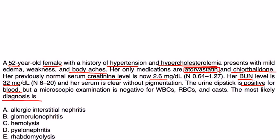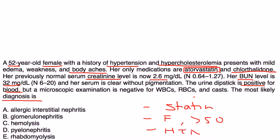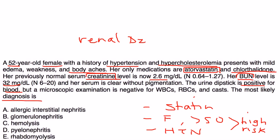In this clinical vignette, the patient is on a statin and has multiple risk factors. She's female, she's above the age of 50, and she has hypertension — so she's high risk for developing myopathy. Her BUN and creatinine levels are high, indicating renal disease. Note: don't confuse creatinine with creatinine kinase — those are two different values. She also develops body aches, so she is most likely experiencing rhabdomyolysis induced by her statin.